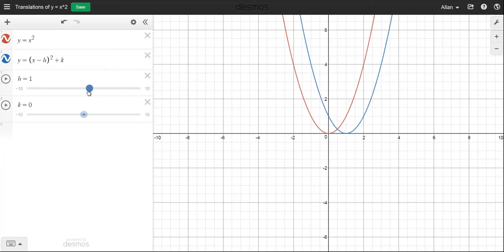So there's the one again. So I make h one, then it's gone one to the right. If I made h, let's say four, there's four right there, it's gone four to the right.